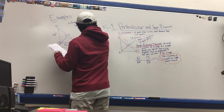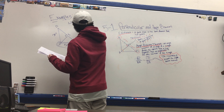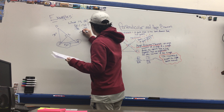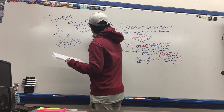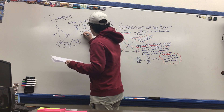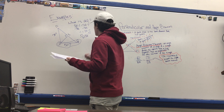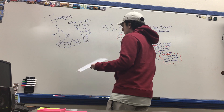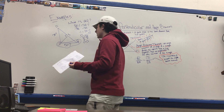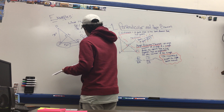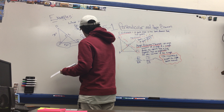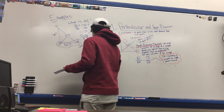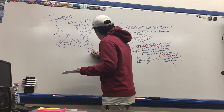We set 3n minus 1 equal to 5n minus 7. Subtracting 3n from both sides: negative 1 equals 2n minus 7. Adding 7 to both sides: 6 equals 2n, so n equals 3. Plugging n into QR, which is 5n minus 7: 5 times 3 is 15, minus 7 gives us QR equals 8.